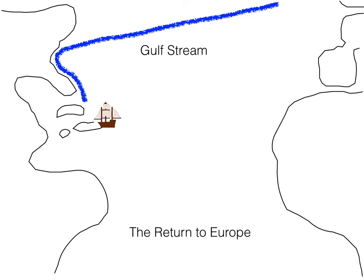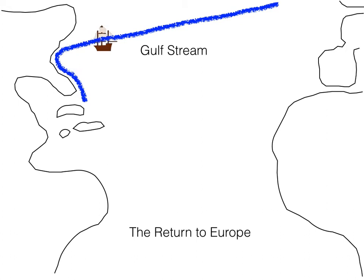The other assistance would be called the Gulf Stream — a current, an ocean current, kind of like a river in the ocean that moves from the Gulf of Mexico up the coast of the United States, but then makes a hard right turn at Cape Hatteras, North Carolina.